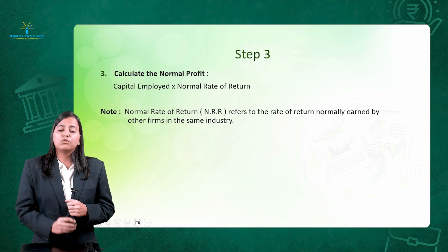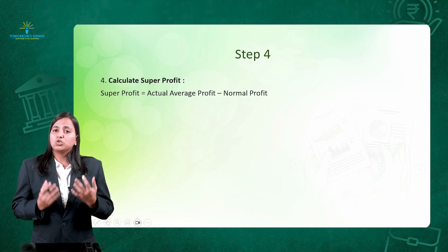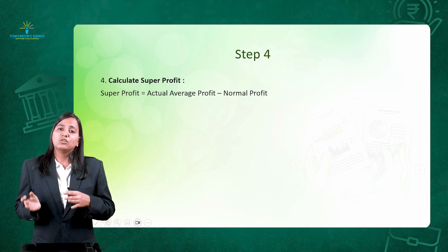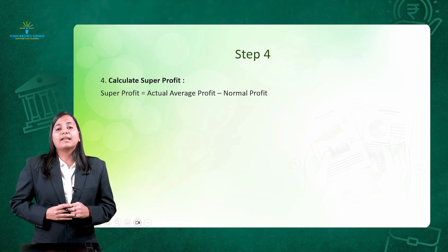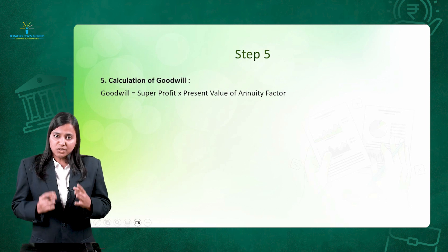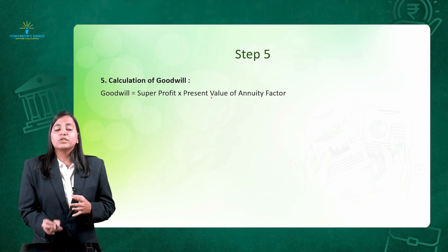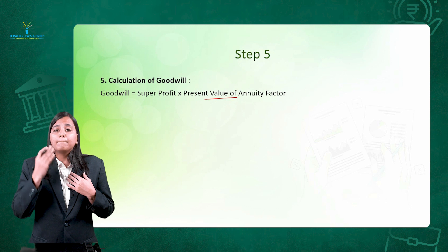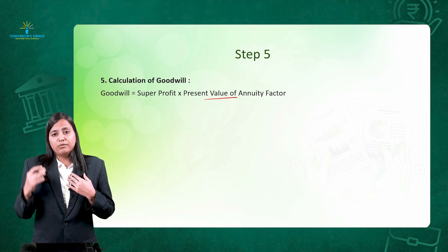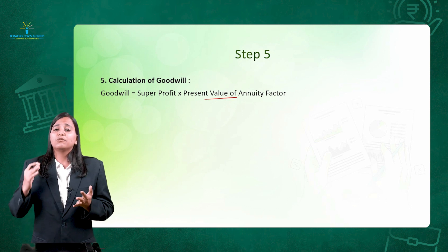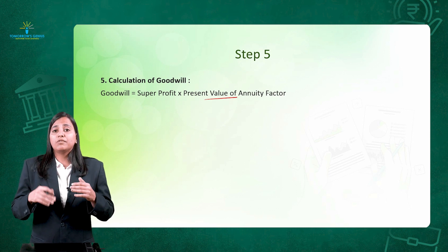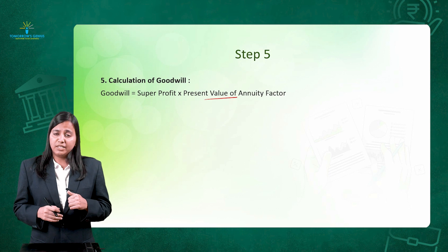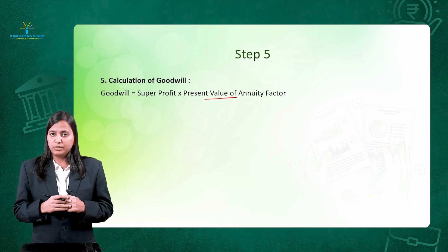Step 4 is calculation of super profit, which is the excess of average profit over normal profit. Finally, the calculation of goodwill: instead of multiplying super profit with number of years of purchase, we multiply it with the present value of annuity factor — because we are considering what the future value will be worth in the present. That is the reason we replace the number of years of purchase with the present value of annuity factor.